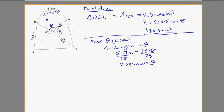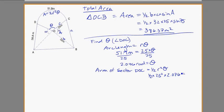Now I'll go ahead and solve for the area of the sector DOC, which is equal to ½r²θ. That's ½×25²×2.076 radians. Plugging that into our calculator, we get 648.75 meters squared. Watch your units — meters squared. So I've got 2 of the 4 areas done.